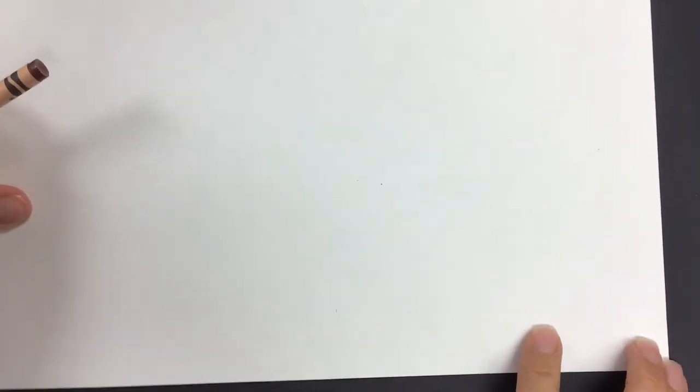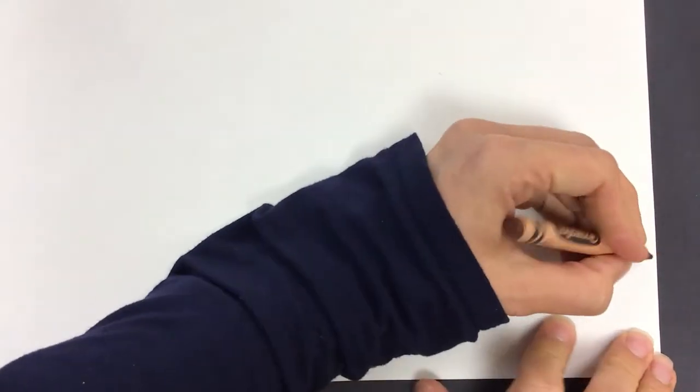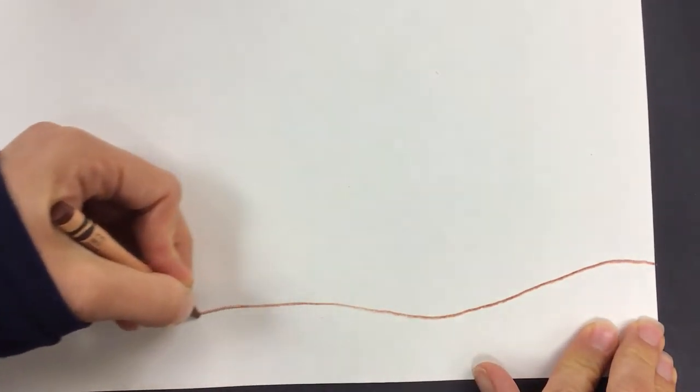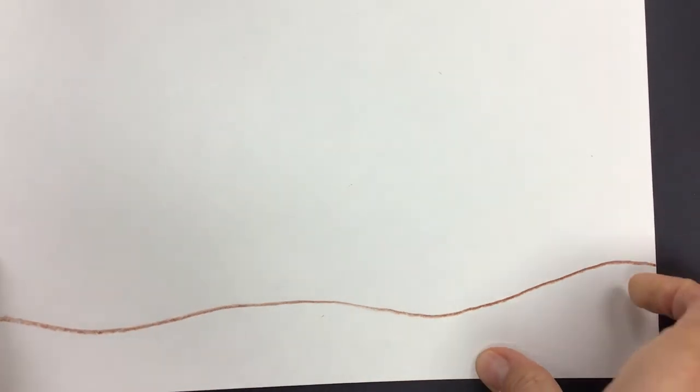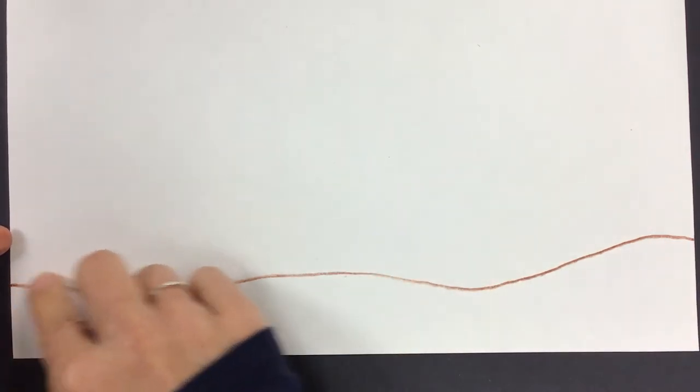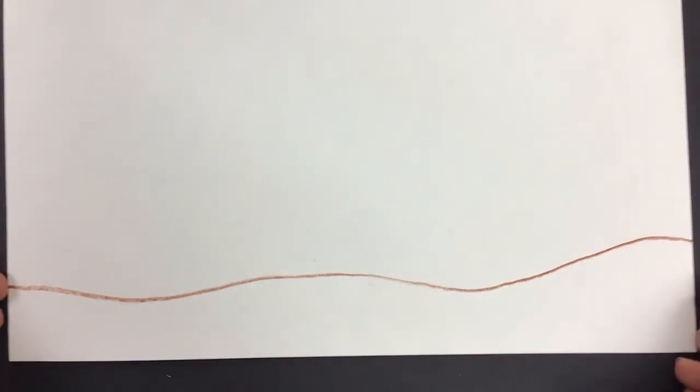It doesn't matter which color, any of your fall colors will be great and I'm going to start at the bottom of the page and make what is called a foreground. You might remember in Grant Wood's paintings like Young Corn, he shows a hilly looking line which is just a wavy line, one of our art elements. He does it right at the bottom of the page. This will appear closest to our eyes.